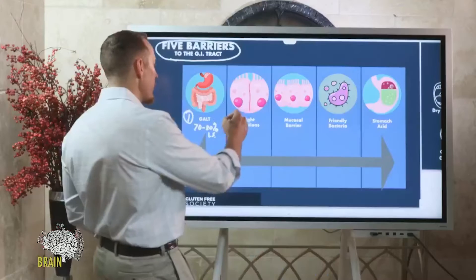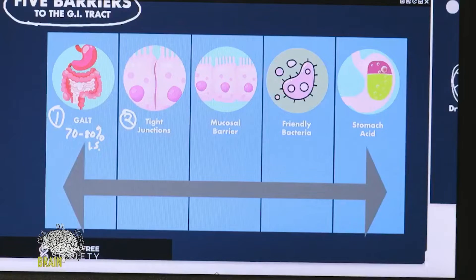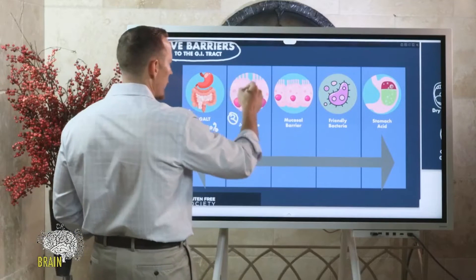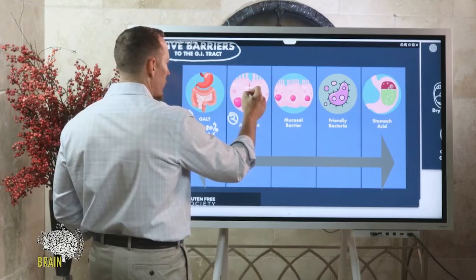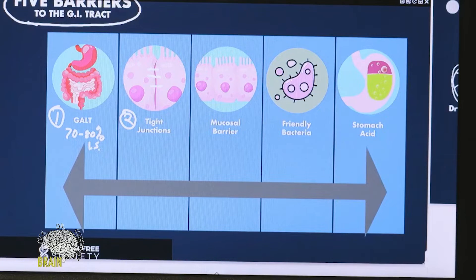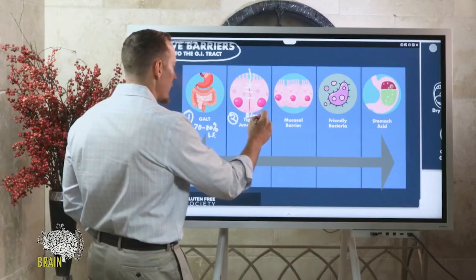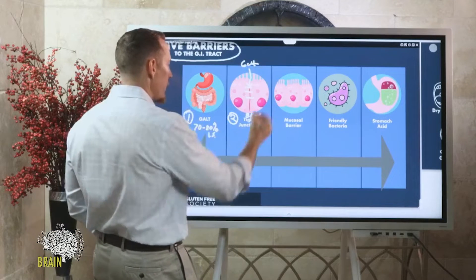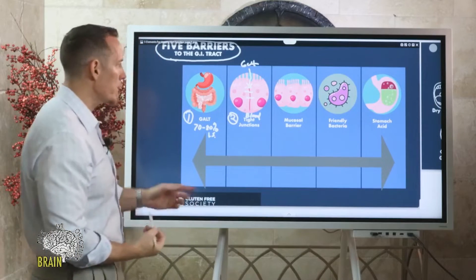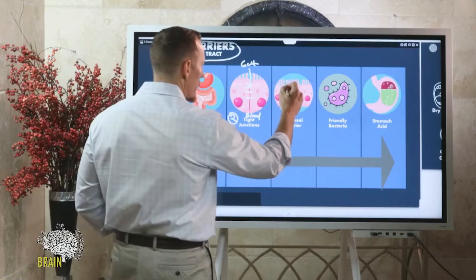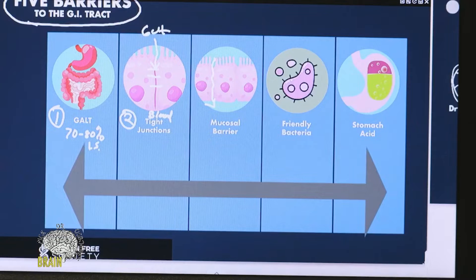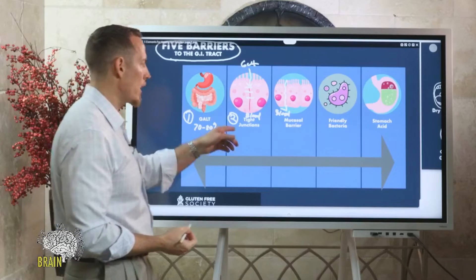The second barrier are your tight junctions - the bridges in between gut cells. Imagine this is a gut cell over here, this is a gut cell over here. In between there's these little bridges, these little anchors called tight junctions. It's what keeps things from leaking. Over here's your blood, and up here is your gut. Things leak through those two cells, leak in between, and hit your bloodstream.